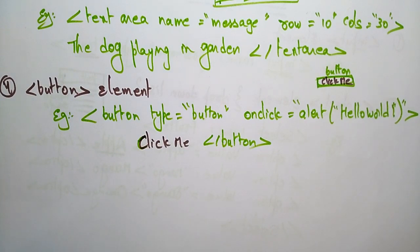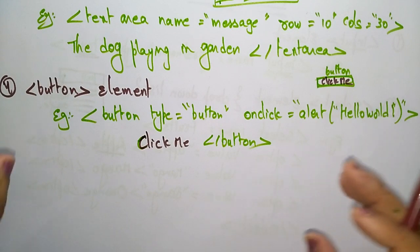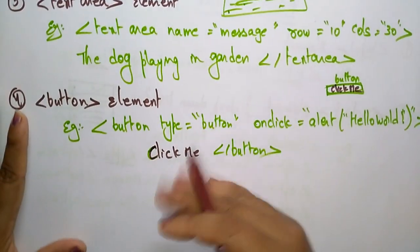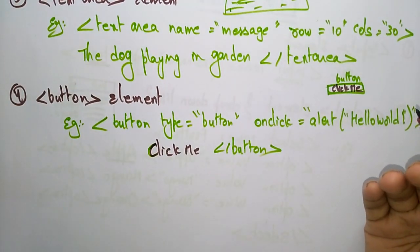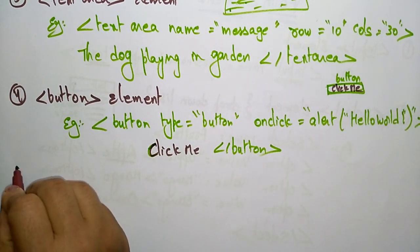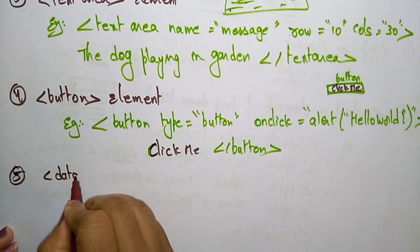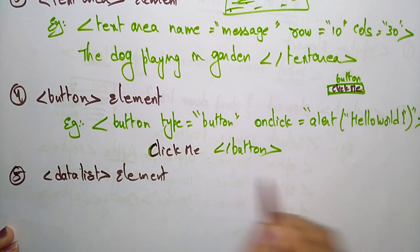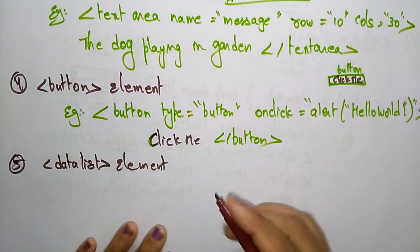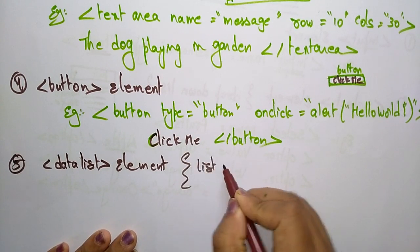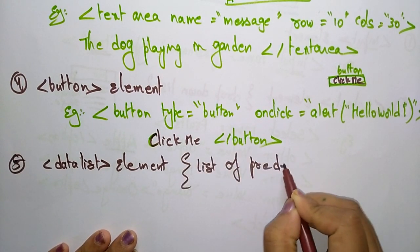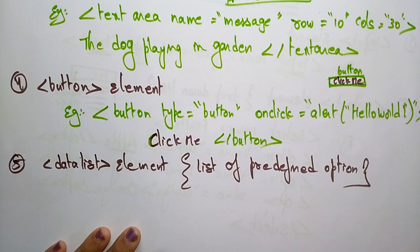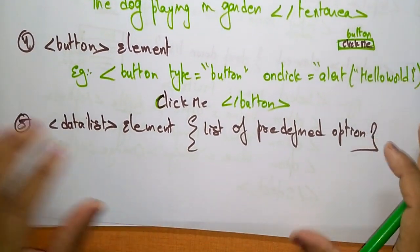These are the form elements used in HTML as well as HTML5. There are also form elements used only in HTML5. One is the datalist element — a new form element introduced in HTML5. It specifies a list of predefined options for an input element. Let me write the syntax for this.